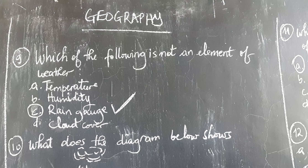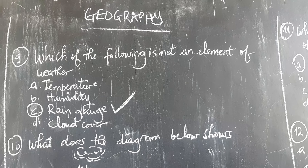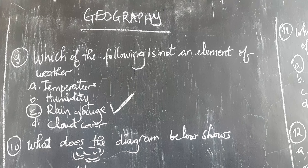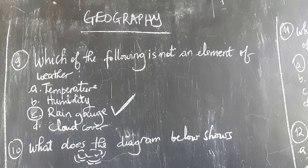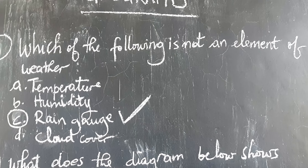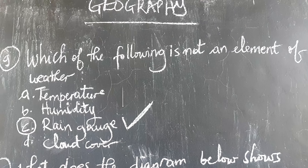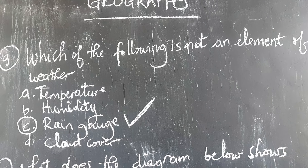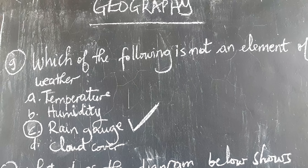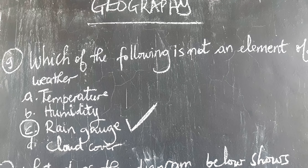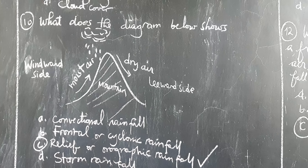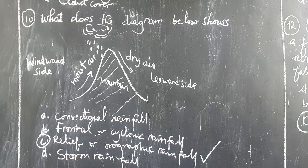We have question number nine: Which of the following is not an element of weather? A. Temperature, B. Humidity, C. Rain Gauge, D. Cloud Cover. The correct answer is C, Rain Gauge. Rain Gauge is not an element of weather, but an instrument that is used to measure rainfall. So therefore, the correct answer is C.